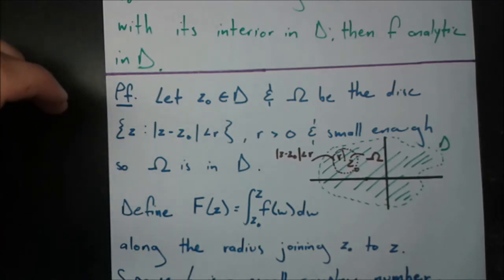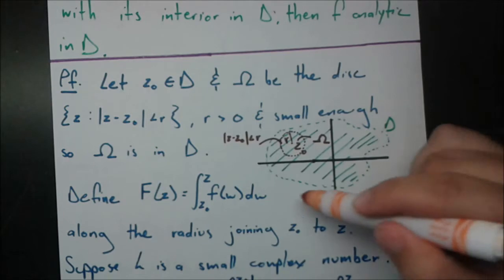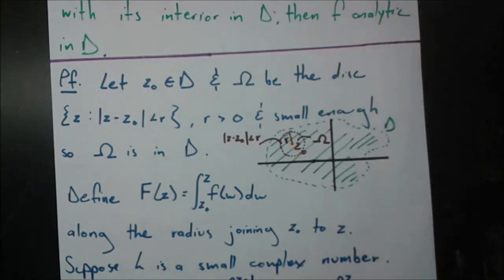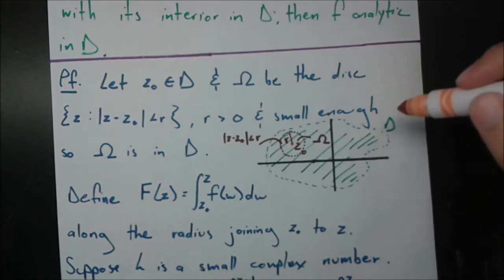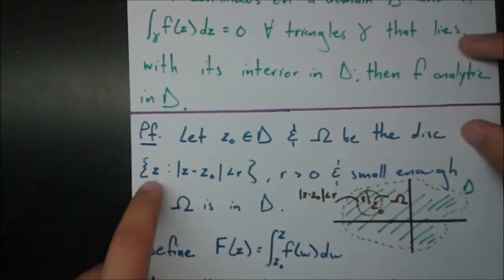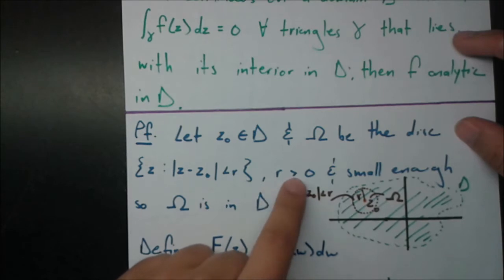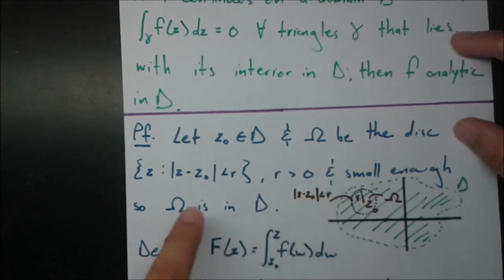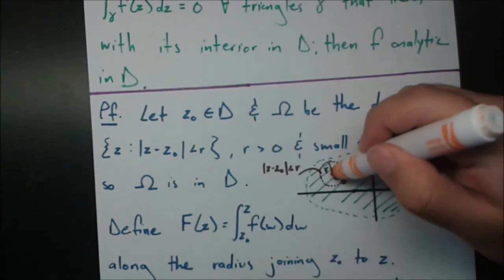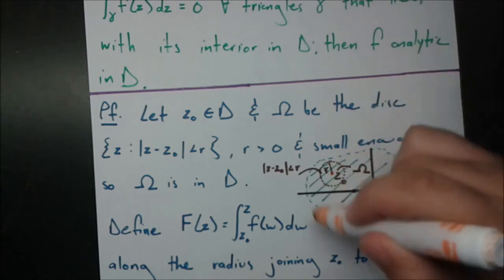Proof: first we let z₀ be an element of D. This green domain is our domain, and this point in the center of the circle is z₀. Now suppose omega is a disk centered at z₀ with radius r, where r is some positive number small enough so that the disk lies completely in D.